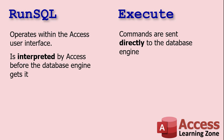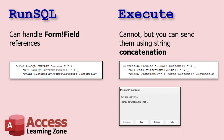RunSQL operates within the Access user interface — it's interpreted by Access before the database engine gets it. Execute sends commands directly to the database engine. RunSQL, since it's working within the Access interface, knows about objects like forms and their fields. So if you format a RunSQL statement with Forms!Customer!CustomerID inside the SQL, it can handle it. If you try that with Execute, you'll get a 'too few parameters' error. You can still reformat the code using string concatenation at the VBA level before sending it to Execute.